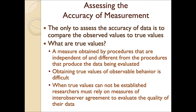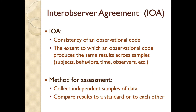In natural sciences, when you want to assess the accuracy of a measurement, you do so by comparing the observed values to the true values. But when we're observing human behavior, obtaining a true value becomes difficult. So when we don't have access to true values, we rely on measures of inter-observer agreement to evaluate the quality of our data. That essentially is the consistency of an observational code, or the extent to which the observation code produces the same results across samples — including the target behaviors, the dimension being measured, and how an observer applies it to capture data.